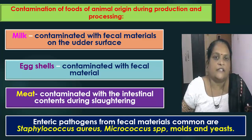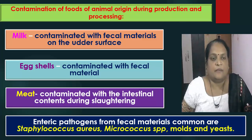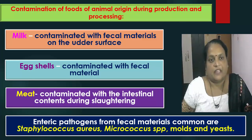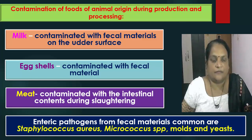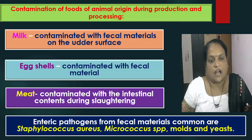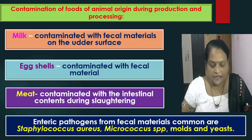Food gets contaminated during production and processing. For example, milk gets contaminated with faecal materials on the udder surface of milking animals. Egg shells are contaminated with faecal material. Meat is contaminated with the intestinal contents during slaughtering. Enteric pathogens from faecal materials commonly found are Staphylococcus aureus, Micrococcus species, molds and yeasts.